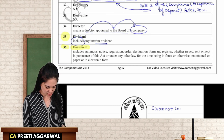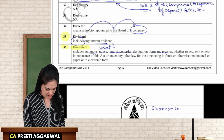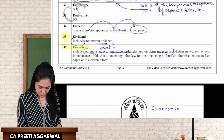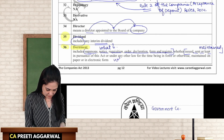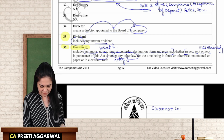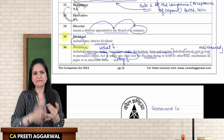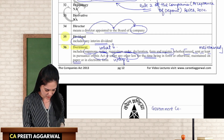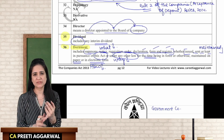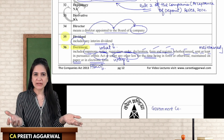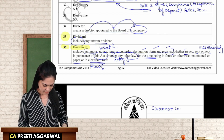Document — it includes summons, notice, requisition, order, declaration, form, and register. Whether it is issued, sent, kept, or maintained — because it is a requirement of this act or any other law for the time being in force, such as GST law or income tax law. How are you maintaining it? Either in paper or electronic form. So a document includes notice, requisition, declaration, form, and register; you are maintaining it because it is required by this act or in pursuance of any other law; and you maintain it in paper or electronic form.